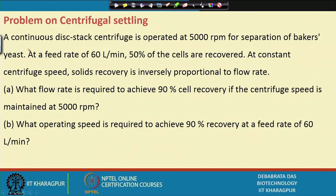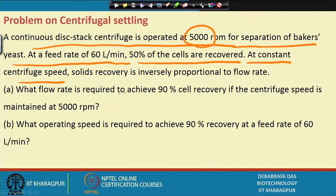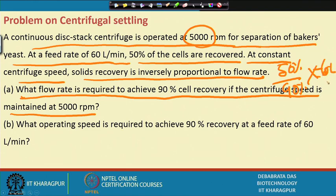A continuous disc-stack centrifuge is operated at 5000 rpm for separation of baker's yeast at a feed rate of 60 liters per minute, and 50 percent of the cells are recovered. Since sigma is proportional to Q at constant centrifuge speed, the solid recovery is inversely proportional to the flow rate. We can write 50%/90% inversely proportional to the flow rate ratio, so: new flow rate = (50/90) × 60 liters per minute = 33.31 liters per minute to achieve 90 percent cell recovery.